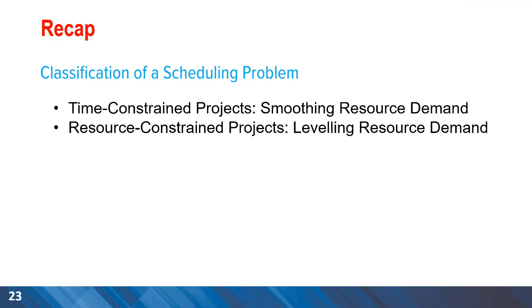So to recap, we classify scheduling problems into two categories: time constraint projects and resource constraint projects. Smoothing resource demand is a comparatively easy problem to solve because we don't want to delay project completion. For resource leveling, we have a hard constraint on availability of resources and as a result we need to use priority rules to extend the project duration and meet the available threshold for resources. Thank you for your attention and I look forward to having future discussions.